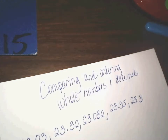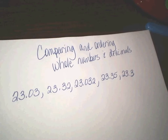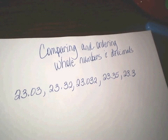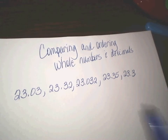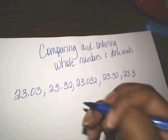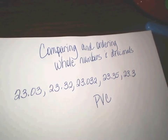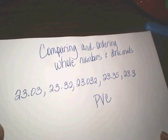Today we're talking about comparing and ordering whole numbers and decimals. There are a few things we have to think about. First, it makes it so much easier when we have an organized way to look at our numbers side by side. A more organized way would be to use a place value chart. We'll refer to the place value chart as a PVC.